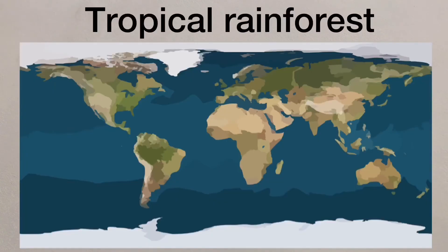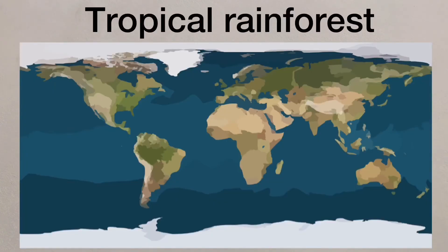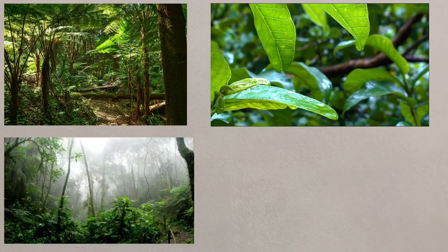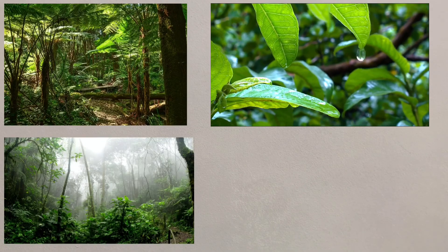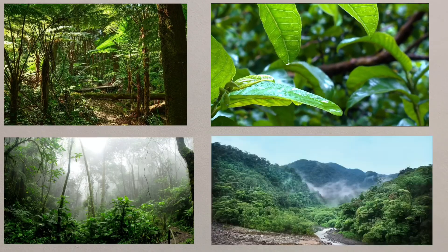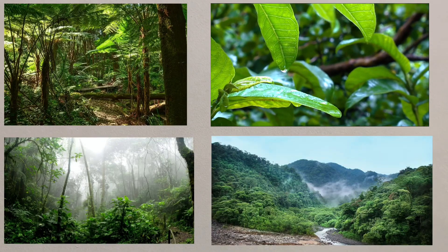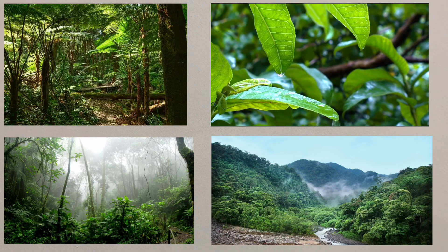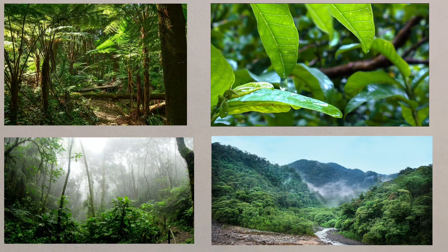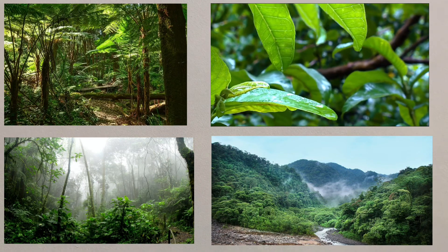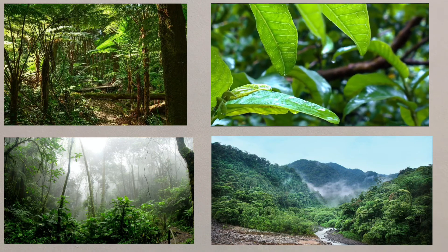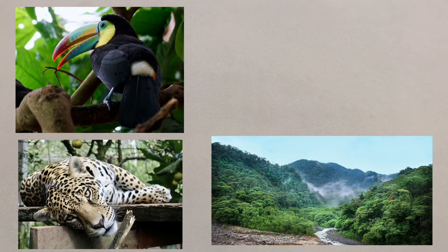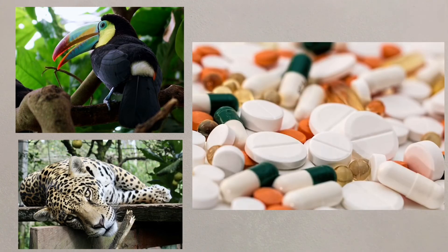Finally there are tropical rainforests lying close to the equator. High temperatures and heavy rainfall are brought by low pressure belts and this creates ideal conditions for plants to grow. More than half the world's species of plants and animals live in this biome, with many medicines coming from the rainforest plants.